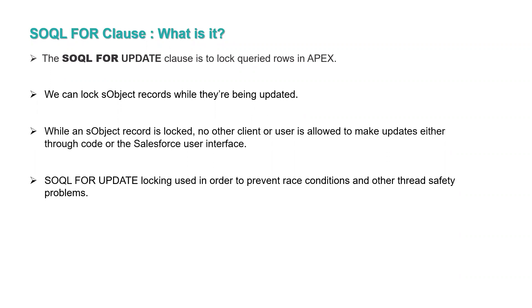SOQL FOR UPDATE locking is used to prevent race conditions and other thread safety problems. A race condition is like when user one wants to update a record, user two wants to update the same record, and user three or user four also want to update the same record. In that case, user one can apply the lock on that particular record and update it, making sure no others can update the same record.